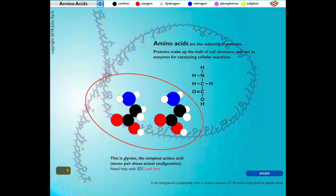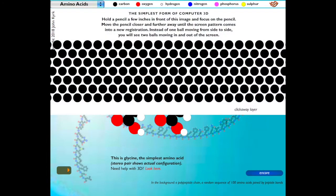If you haven't used a stereo pair before, take a look at this display of dots. Hold a pencil a few inches in front of this image and focus on the pencil. Move the pencil closer and further away from the screen until the pattern comes into a new registration. Instead of one ball moving from side to side, you will see two balls moving in and out of the screen.